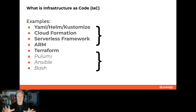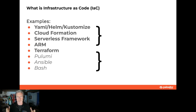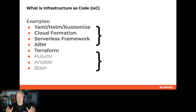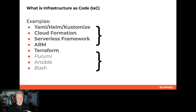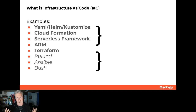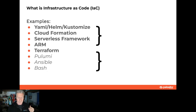So what are we using to provision and how would we create these problems? We're using infrastructure as code. Very few people are going into the console and clicking around anymore. We're creating it as code, putting it into Git as our single source of truth, and doing it in a variety of languages. I'll be focusing on YAML, Helm, and Kustomize. There are also CloudFormation, serverless framework, ARM, Terraform — tons of them — and these are all declarative.